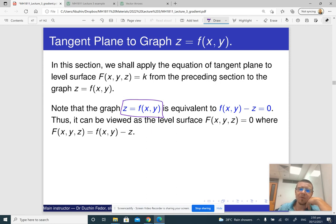Basically we just move z to the other side and then we get an equation that looks like this: f(x, y) minus z equals zero. But then we just think of this as a level surface of the function F(x, y, z), which equals f(x, y) minus z.